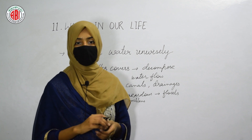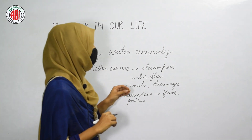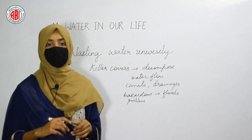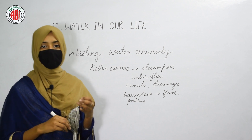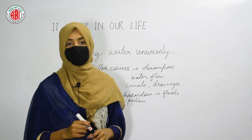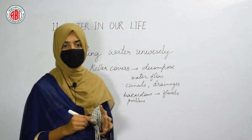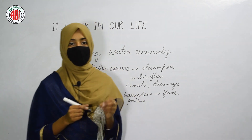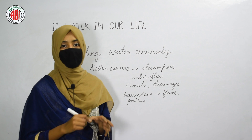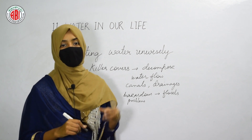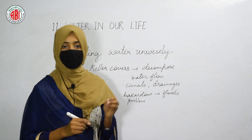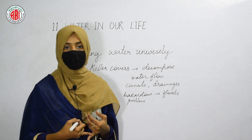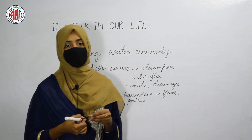Floods are caused due to the blockage of canals and drainages by polythene bags during the rainy season. If we want to prevent these problems, we should avoid using polythene covers — called killer covers. Instead of polythene bags, we can use cloth bags or jute bags to carry goods. Floods disturb the whole lifestyle of human beings and create a lot of problems. To prevent the problems caused by floods, we should avoid polythene bags and use jute or cloth bags instead.